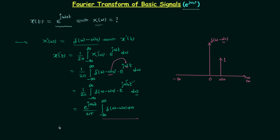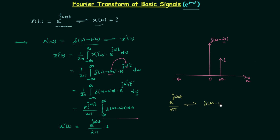Therefore, the time domain signal x'(t) = e^(jω₀t) / 2π. This means that the signal e^(jω₀t) / 2π has the Fourier transform δ(ω − ω₀). We are interested in finding the Fourier transform of e^(jω₀t) itself, so we will multiply 2π to both sides of this relationship.